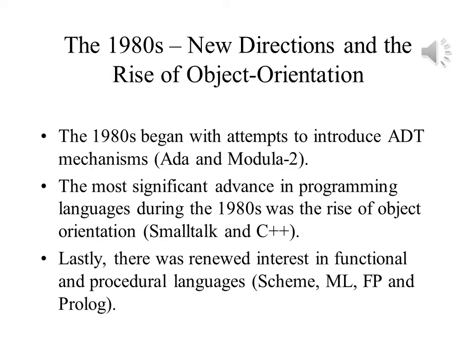New concerns came with the 1980s. There was a great deal of interest in adding a mechanism to support abstract data types in programming languages — a mathematical model for certain types of data structures such as stacks and queues. Both ADA and Modula-2 facilitated this. Object-oriented languages became popular in the 1980s, including Smalltalk and C++. Lastly, there was renewed interest in functional languages such as Scheme, ML, and FP, as well as declarative languages such as Prolog.